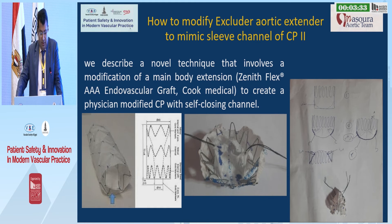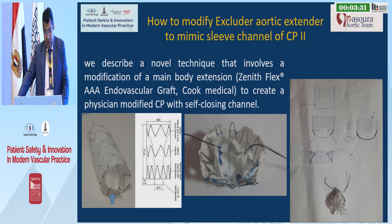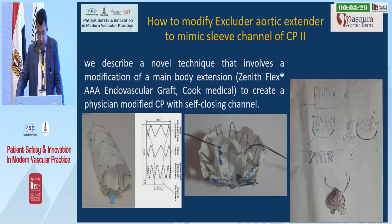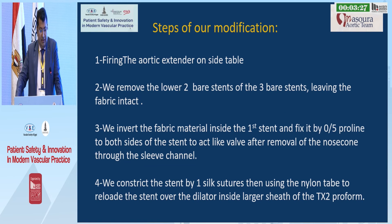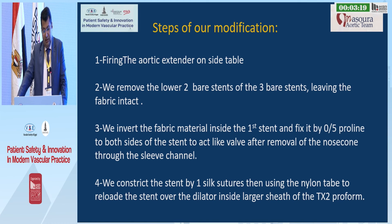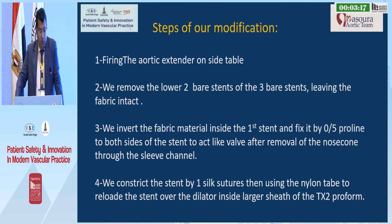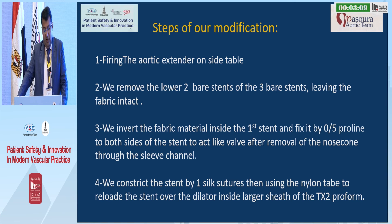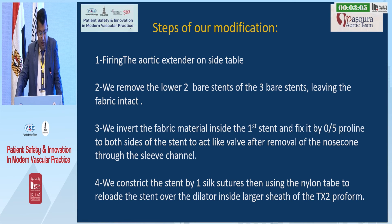This is a piece of fabric and stent used for this modification. The steps of our modification begin with the aortic extender on the table. We remove the lower 2-pair stents of the 3-pair stents leaving the fabric intact, then invert the fabric material inside the first stent and fix it with 5-0 prolene to both sides of the stent to act like a valve after removal of the nose cone through the sleeve channel.